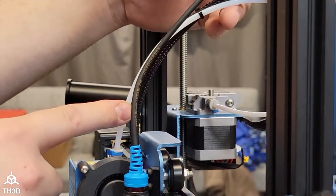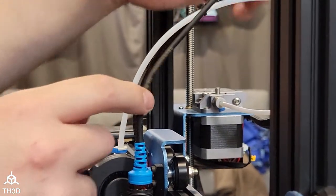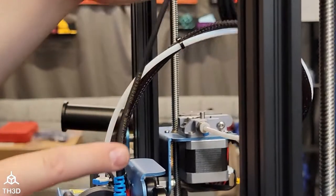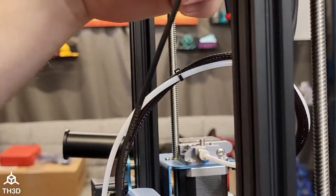When we attach the sensor wire to our existing printer wiring, we do not want to go straight up because you can actually damage the sensor wire as it will be moving like this the entire time.